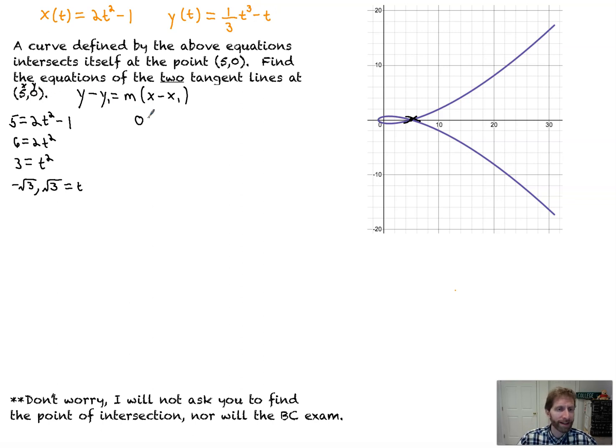Or we could have solved out and said, you know what? I'm going to set 0 equal to 1/3 t³ minus t, and solve. So that will be 0 equals, the GCF is t, so it's 1/3 t² minus 1. And each of these parts are equal to 0. So you have t equals 0, and you have when this is equal to 0.